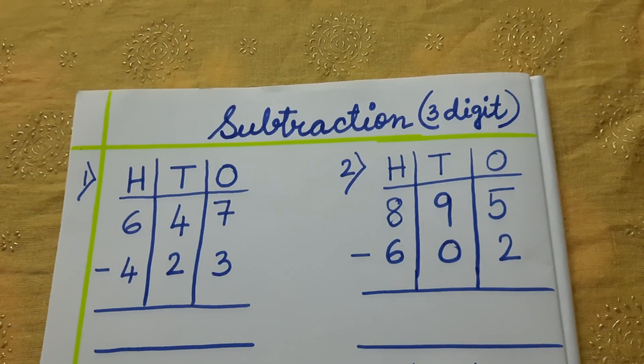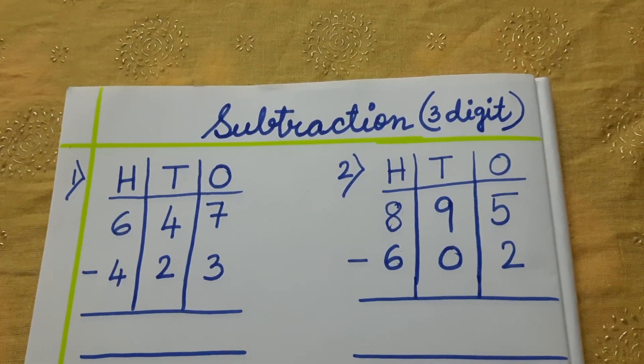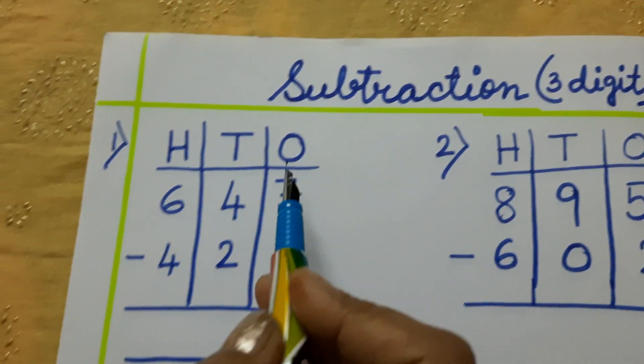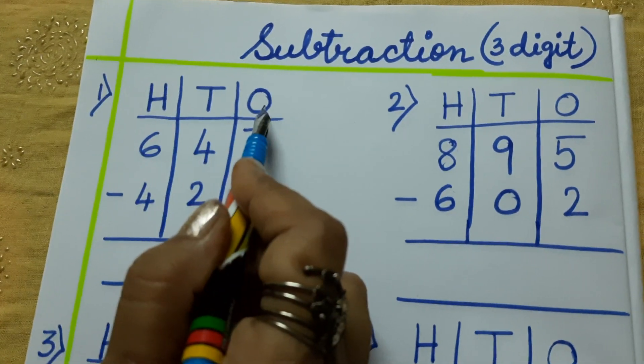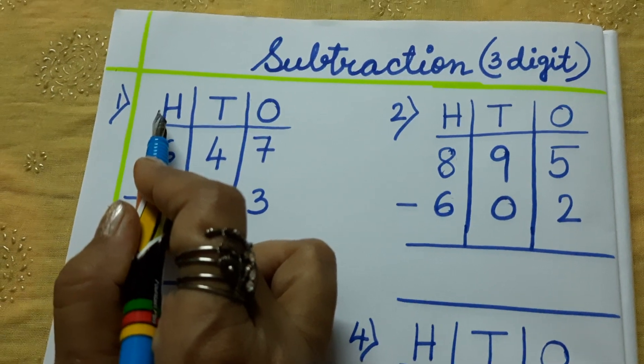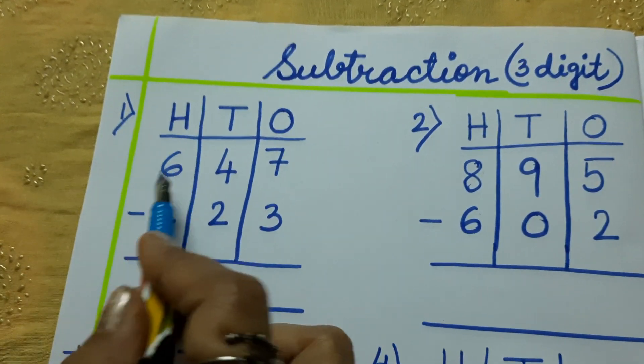Let's see how we are going to write it. See, 1s, 10s, 100. First this we have to mention. And the numbers I have written.